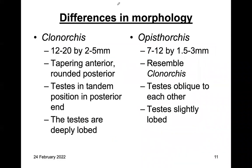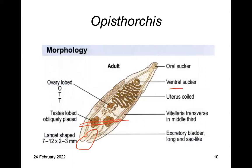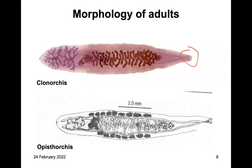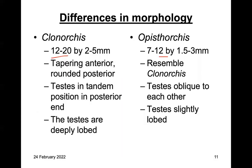There are some differences in morphology between these two parasites. Clonorchis is bigger than Opisthorchis. Both resemble each other with a tapering anterior and rounded posterior. In Clonorchis, the testes are in tandem position, while in Opisthorchis the testes are oblique to each other. The testes in Clonorchis are deeply lobed, while in Opisthorchis they are slightly lobed. These are the key differences when comparing images of the two.